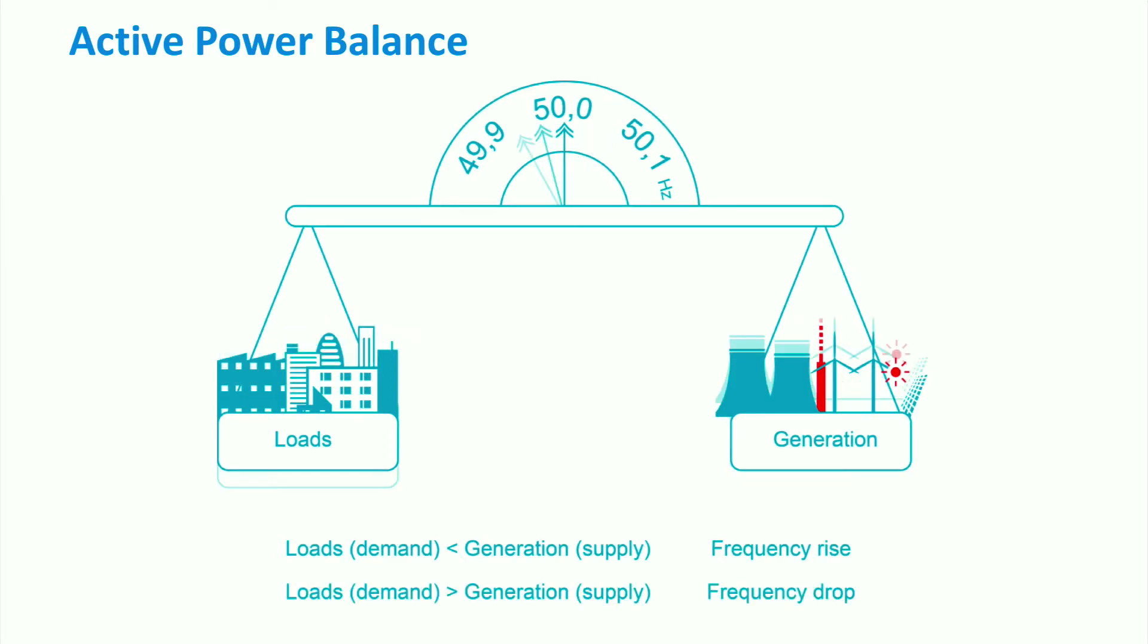If the power generation is lower than the total demand, the frequency drops. This occurs, for example, when the outage of generation units takes place.